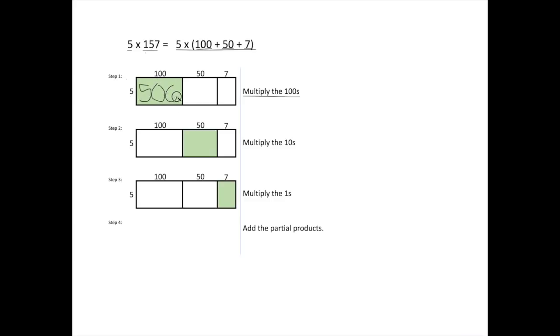Step number two says multiply the tens place. So 5 times 50, let's find our basic fact, which is 5 times 5, and that's 25. We add on our one zero, and our answer is 250.